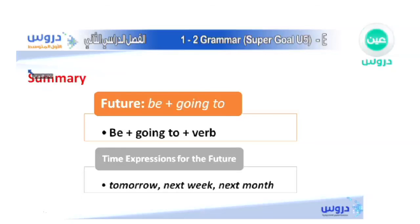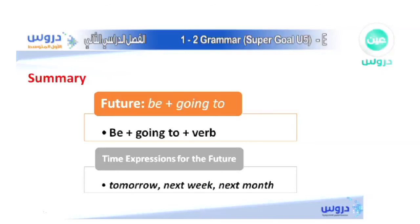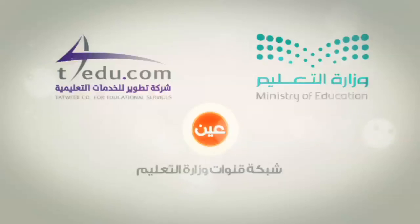Thank you very much, everyone. This is the summary of our lesson. We talked about the future with 'be going to' — am, is, are going to — followed by the verb. We also talked about time expressions for the future: tomorrow, next week, next year, next month, etc. This is the end of our lesson. Thank you very much for being with me. I hope to see you every time — goodbye, everyone!